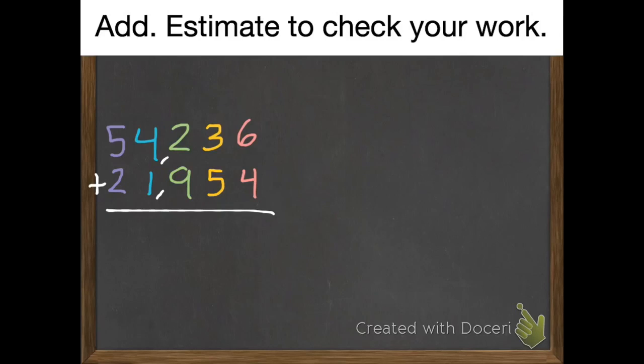So six plus four is ten. I can't fit ten in my ones place value, so I can turn that ten into one ten. Which means I have nothing left over. No ones left.